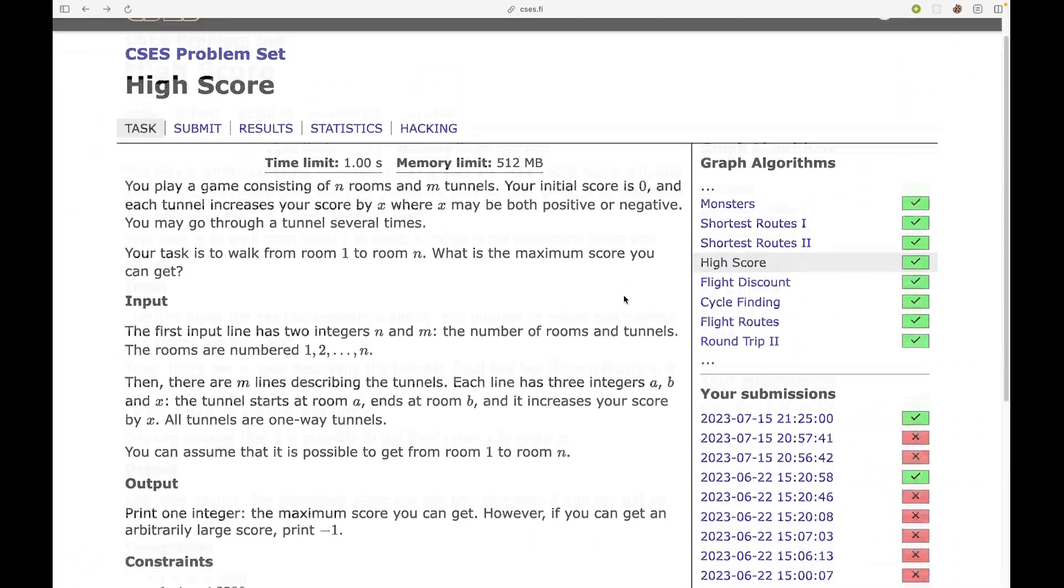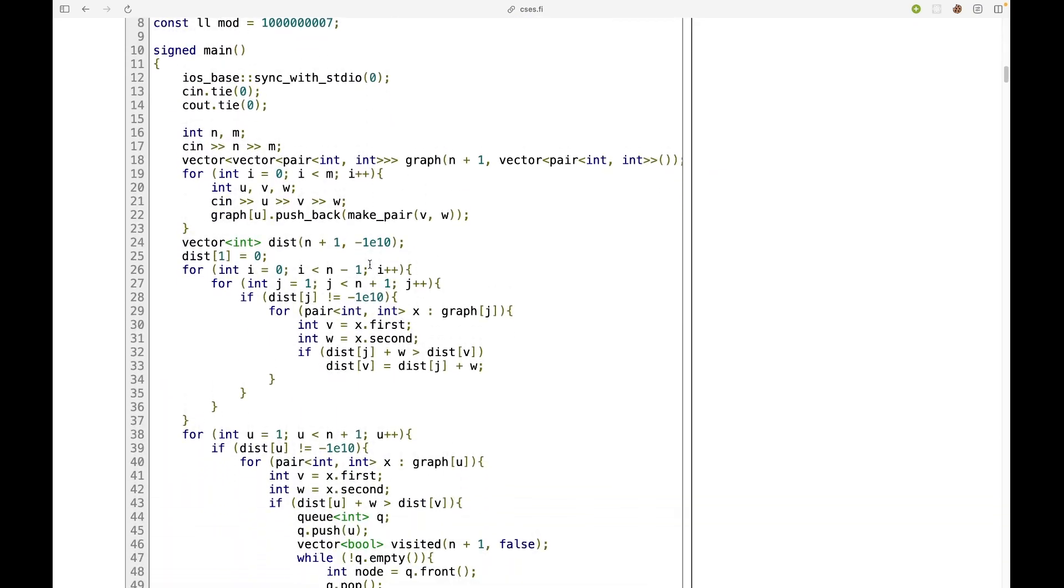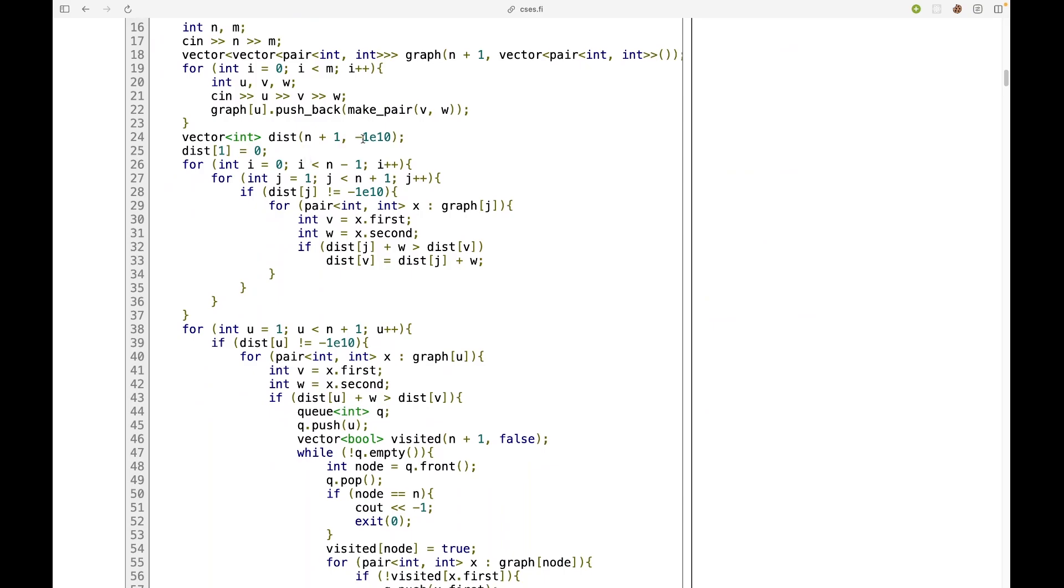So let's see the code this time. I won't be coding it, but I will show you the code. So first we take n and m as input and the graph. Then we have distances. Currently since I want to maximize the distance, I will keep the initial distances minus infinity or a very large number.